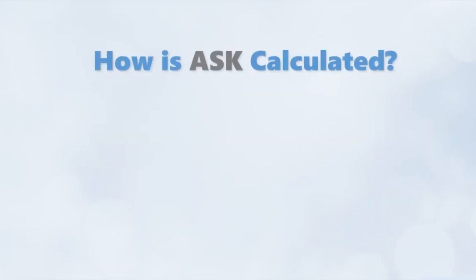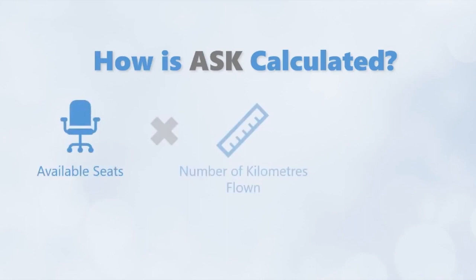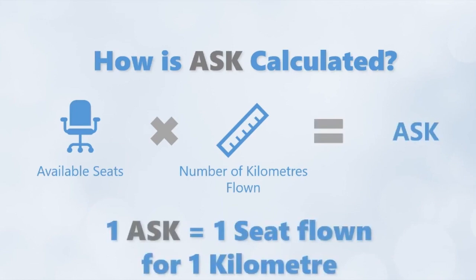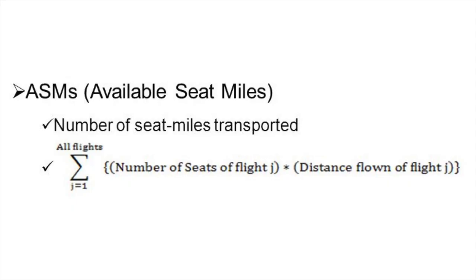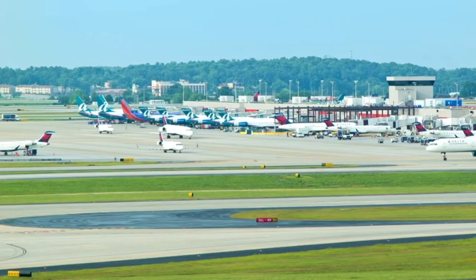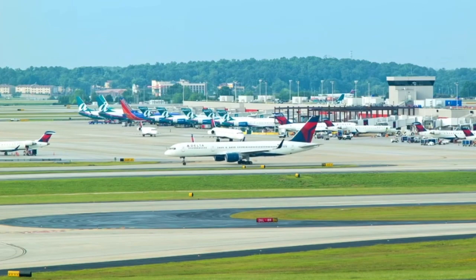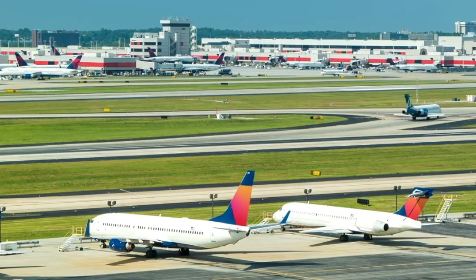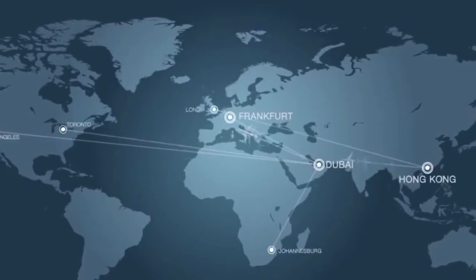So let's look at how it's calculated. The available seat kilometers measures an airline's passenger carrying capacity, which means that it is a multiplication of the seats available multiplied by the distance flown. This number can be calculated per plane or per airline. It can also be calculated per route, and often an aggregation of multiple airlines gives us network-level ASKs or ASMs.